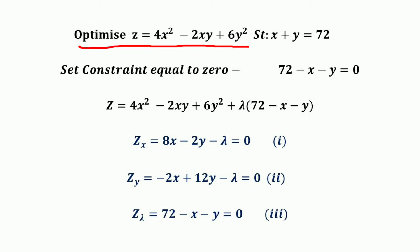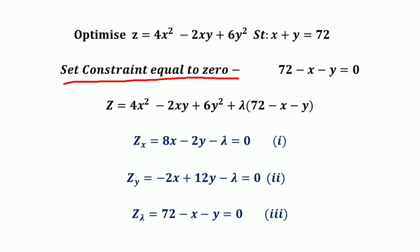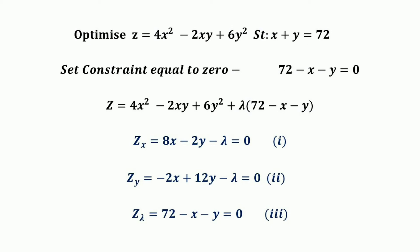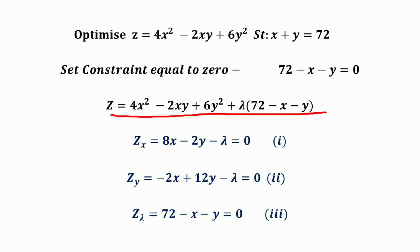Here we have a function to optimize: z = 4x² − 2xy + 6y², subjected to the constraint x + y = 72. The first step is to set the constraint equal to zero: 72 − x − y = 0. Then multiply by lambda to get λ(72 − x − y), and add this to the objective function to form the new Lagrangian: z = 4x² − 2xy + 6y² + λ(72 − x − y). Now we take the first-order partial derivatives and set them equal to zero.